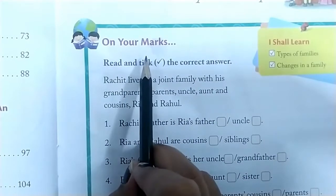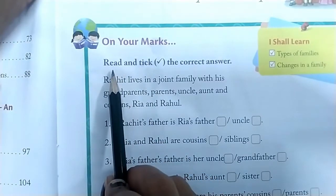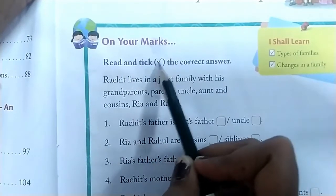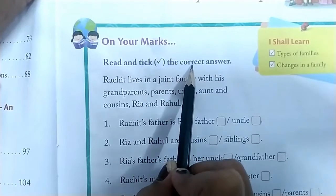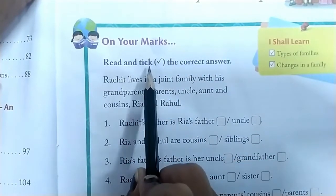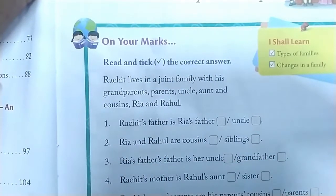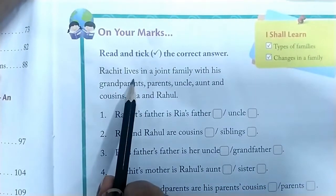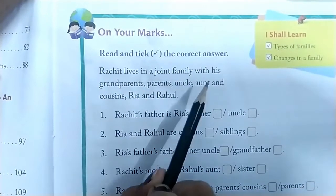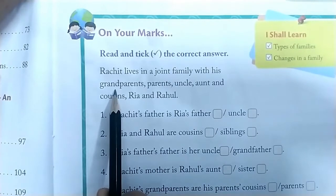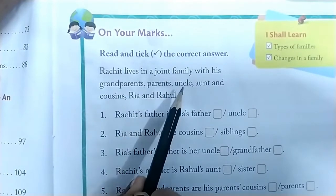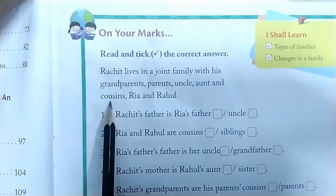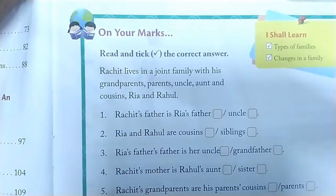On your mark, let's read it. Read and tick — tick means this mark for the correct answer. Read and tick the correct answer. Rohit lives in a joint family with his grandparents, parents, uncle, aunt and cousins Rhea and Rahul.